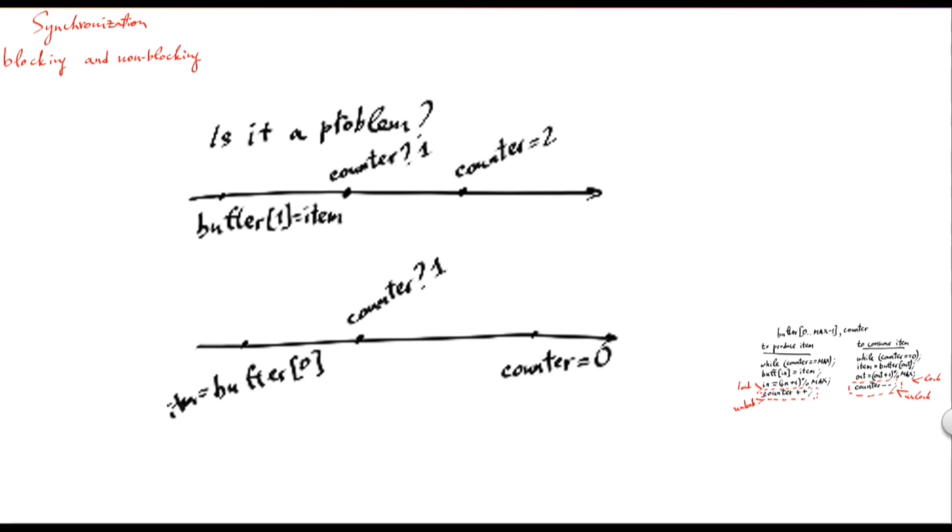So, now what happens is that when the producer is putting an item to the buffer and increments the counter, it would protect these manipulations with the counter with the lock. And, as a result, the concurrent accesses of the counter performed by the consumer would have to be shifted, shifted either before the manipulations of the counter performed by the consumer or after. In this case, let's assume it goes after. So, now, as you can see, the value of the counter read by the consumer would be 2. And, the increment on the counter would be executed incorrectly. So, now the value of the counter, the resulting value of the counter would be 1. So, as I said, this is because both manipulations of the counter are protected with locks.